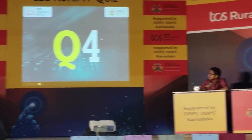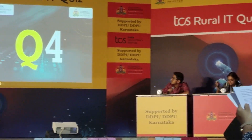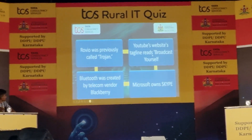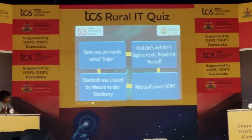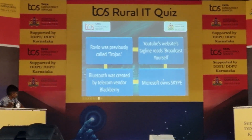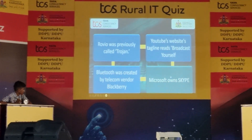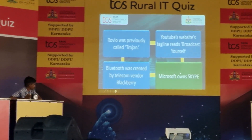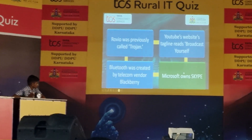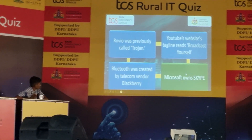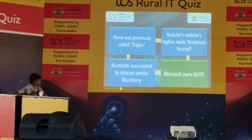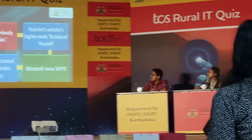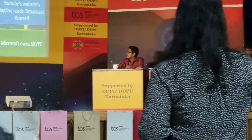Let's move on to the next one. Samrul, your direct question coming up. Go ahead — the first answer: Microsoft Home Skype. Let's click on that. Absolutely right, 50 points. Second answer: Rovio was previously called Trojan. Let's try that — that is wrong. So you get 50 points — one right, one wrong.